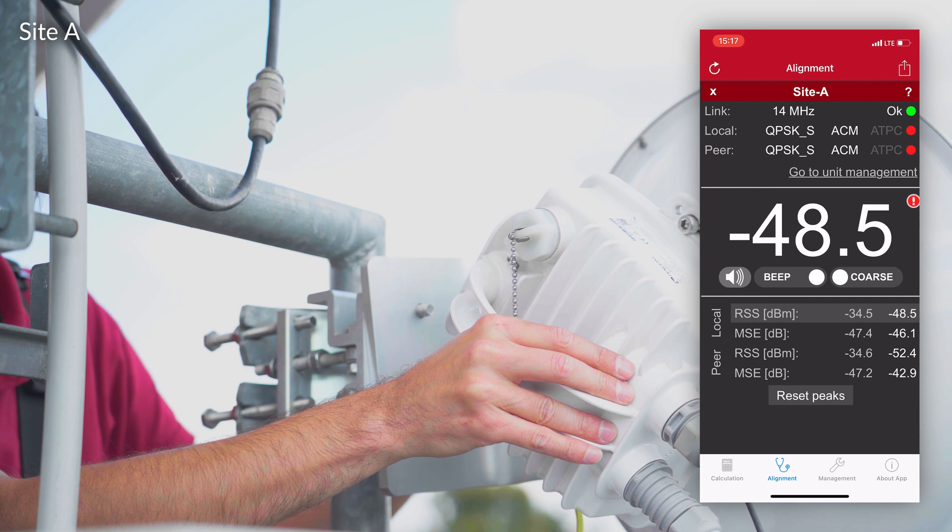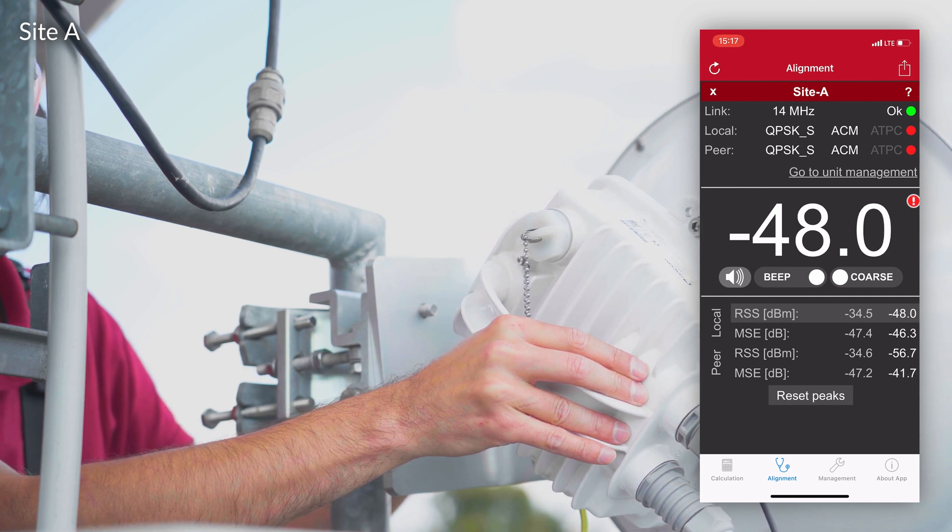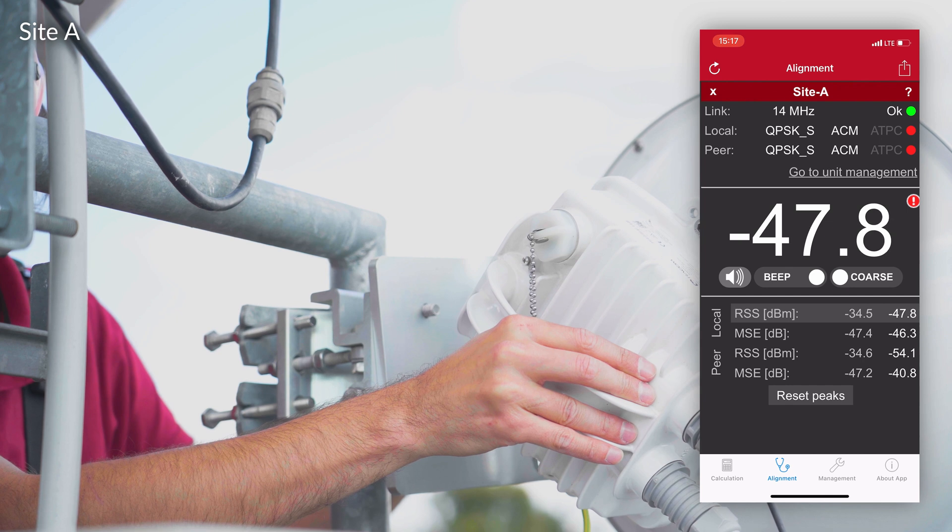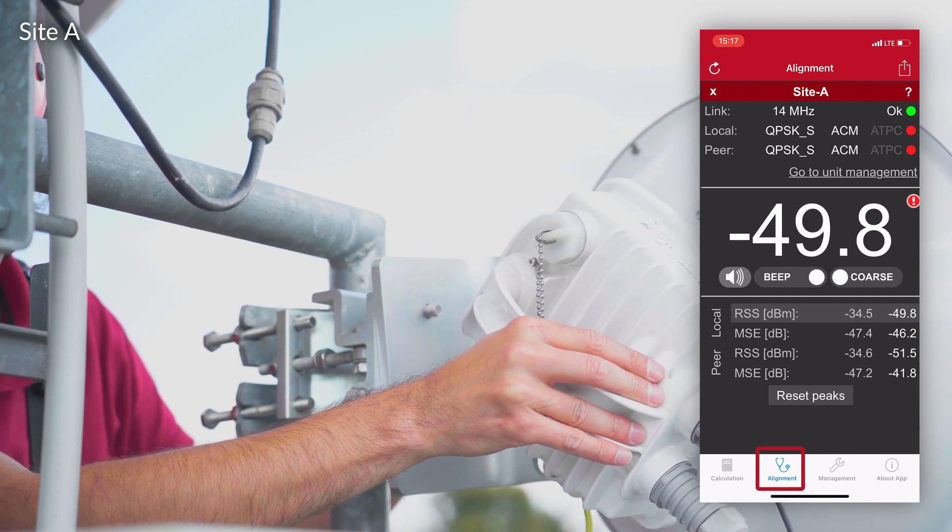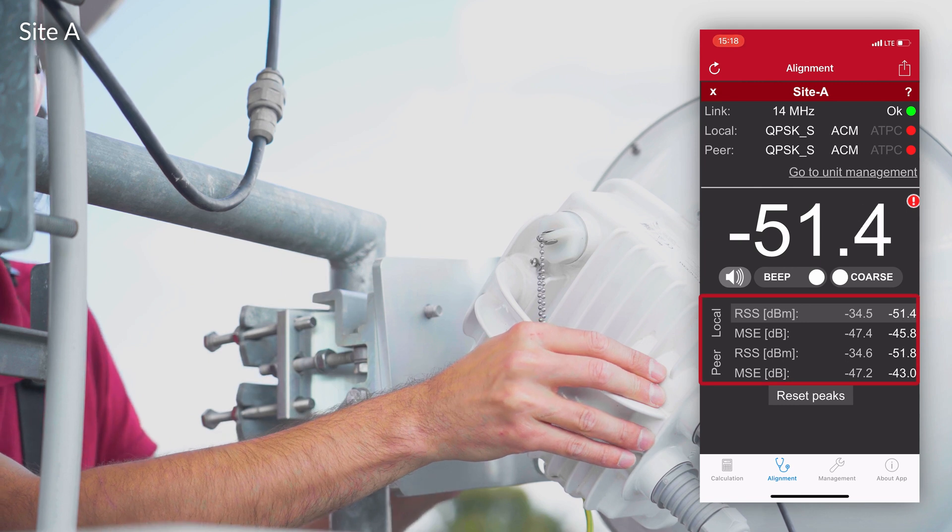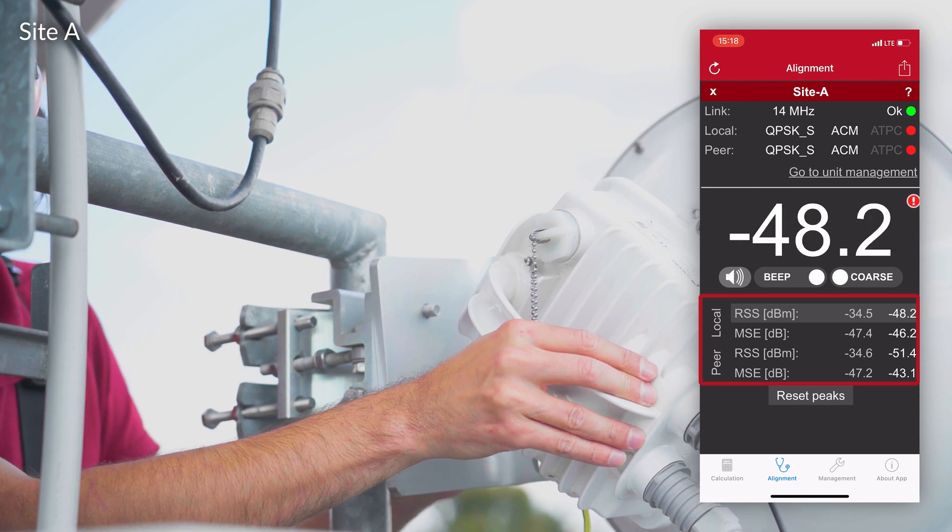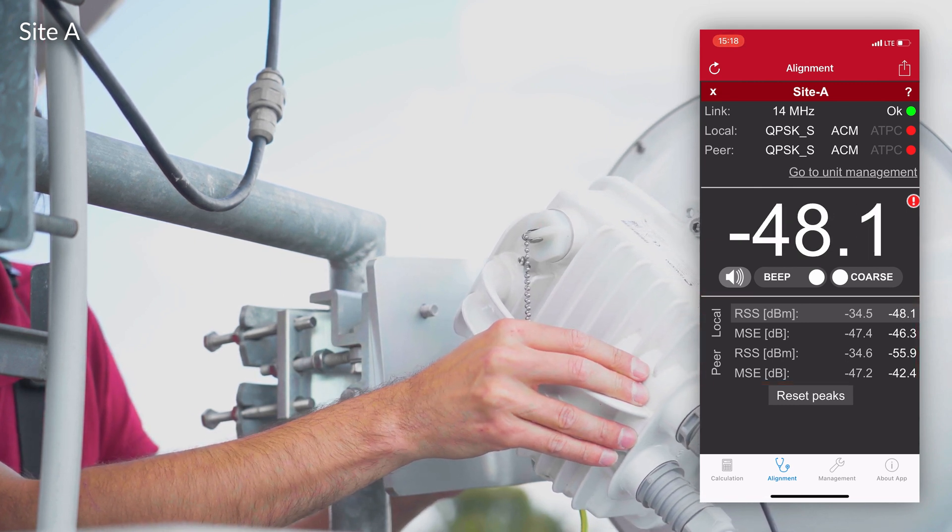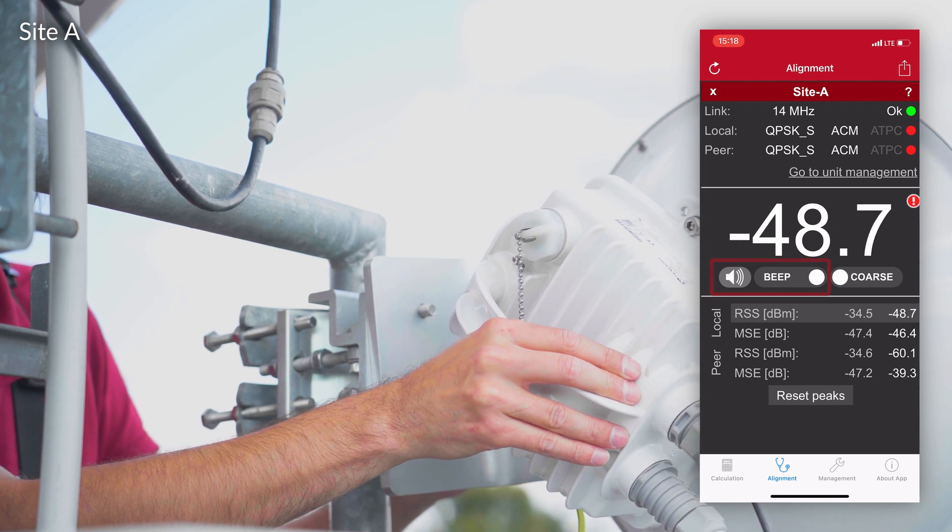Connect your mobile device to Ray service Wi-Fi using the password you set previously. Launch the app and go to the alignment screen. This screen shows you RSS and MSC for both local and peer unit, and it is possible to turn on acoustic signal, which we recommend.